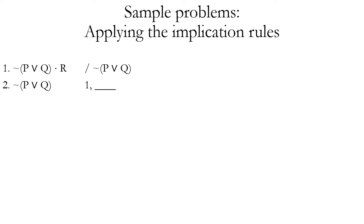Another sample problem: we're filling in the blank on line two. We start with a premise that is a conjunction, and then we're trying to prove one of the conjuncts — tilde (P horseshoe Q). The rule is simplification. Remember, simplification can be used on conjunctions where one or both of the conjuncts is itself a compound proposition, as in this case.